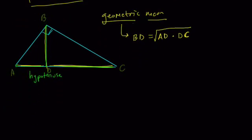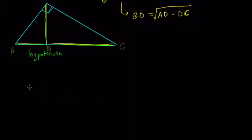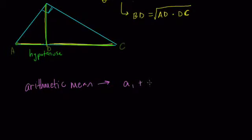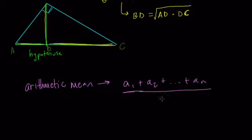But you might be more interested in an application. With arithmetic mean, which you're usually first introduced to — you have a bunch of terms A1 plus A2, all the way up to AN, you add them up and divide by N, the number of terms. This is very different from the geometric mean and isn't always useful.